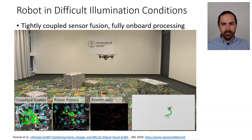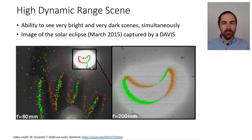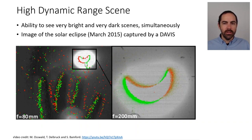Another example was captured during the solar eclipse in March 2015 using a DAVIS sensor, which combines a standard grayscale camera and an event camera. It's able to see very bright and very dark scenes simultaneously — looking at the moon in front of the sun, which is overexposed in the standard frame, but the event camera still shows the silhouette of the moon and the hand. It has very high dynamic range.